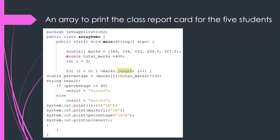After the marks array, we have declared a new variable 'totalmarks' with data type double, initialized to 400. Then there is a variable 'i' with data type int, initialized as zero. We are not only creating an array but also some additional variables to print the class report card. After that, we have used the for statement, and we have also used the length property here because the length property gives the size of the array.